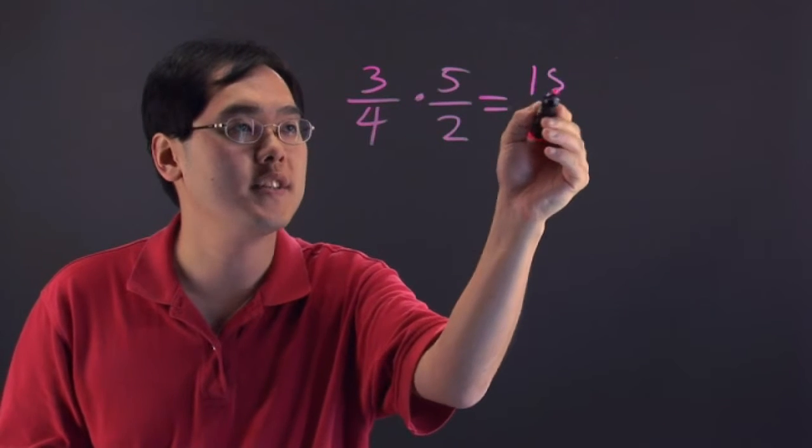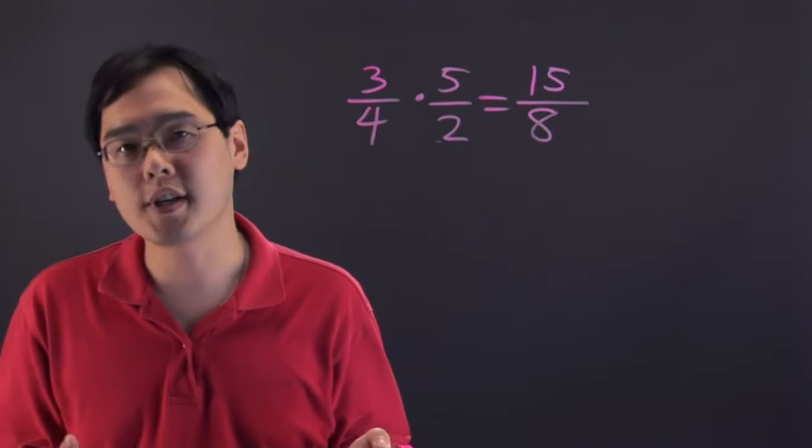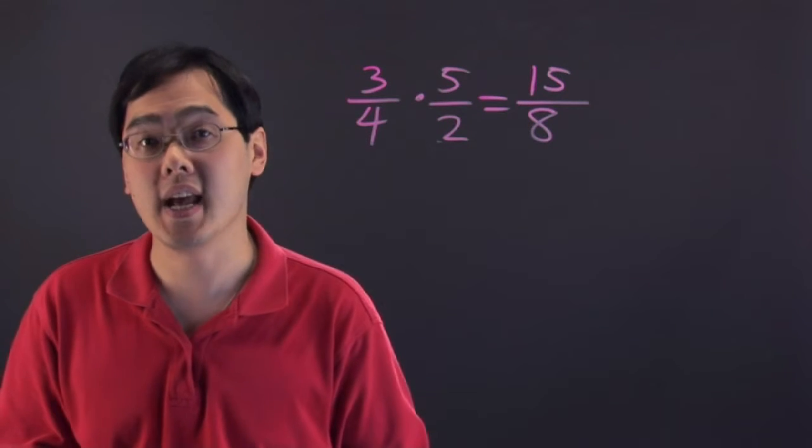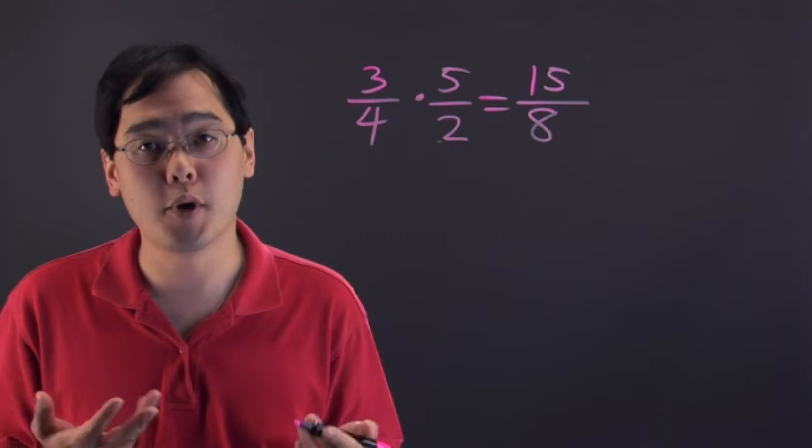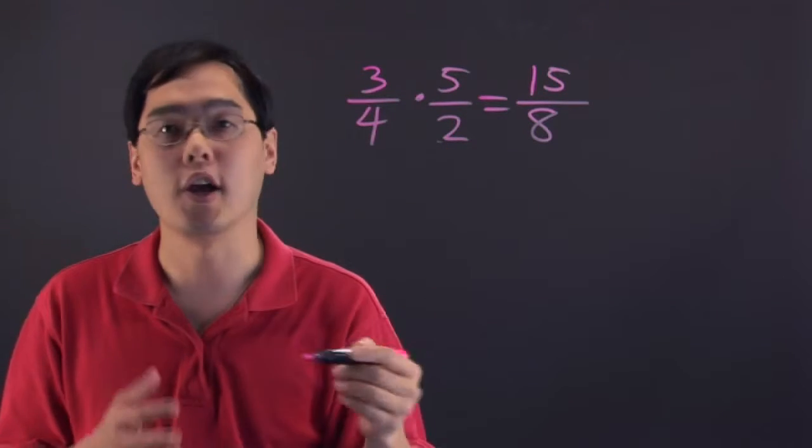3 times 5 here, you've got 15, and then 4 times 2 is going to give you 8. So in this particular case, 3/4 times 5/2 is going to be 15/8. The general pattern of multiplying fractions, like I mentioned before, is just multiply across and you'll be good to go.